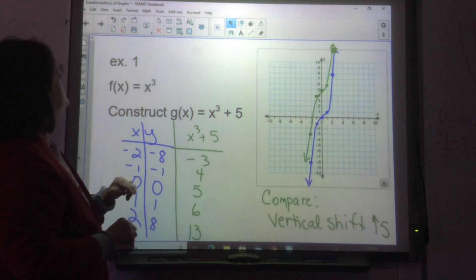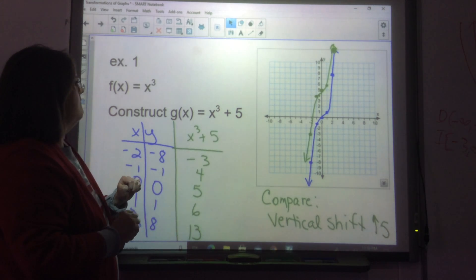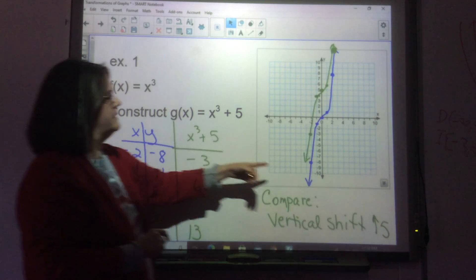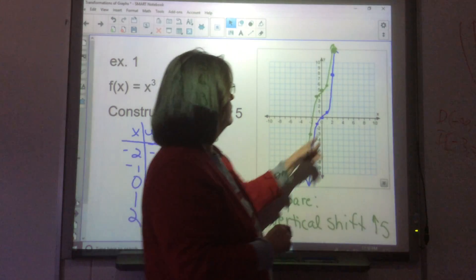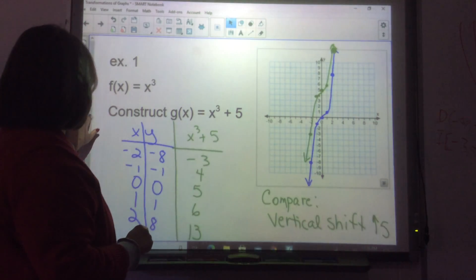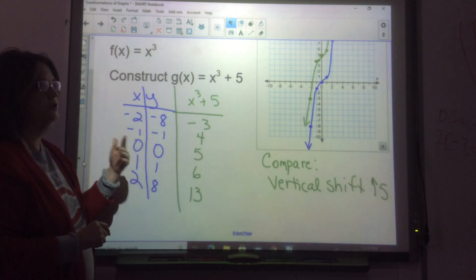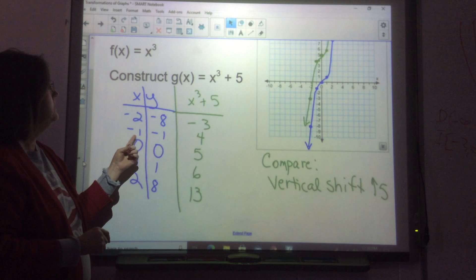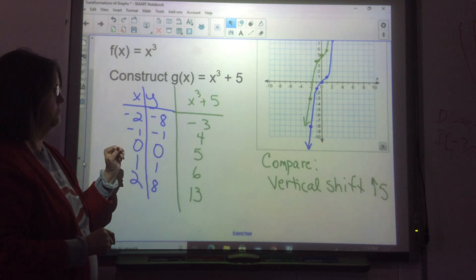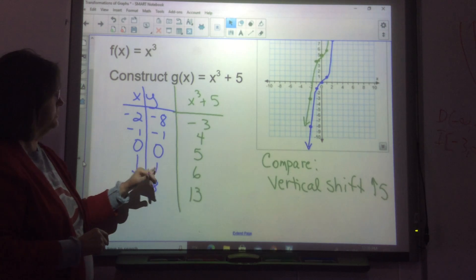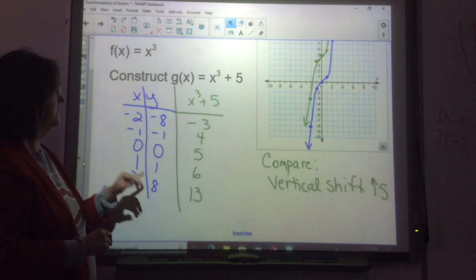So, this is our first example. We have a cube graph here. X to the third power is in blue. That's the blue graph. And I put the table here. So, when I do X to the third power, negative 2 taken to the third power is negative 8. Negative 1 taken to the third power is negative 1. 0 to the third is 0. 1 to the third is 1. 2 to the third is 8.